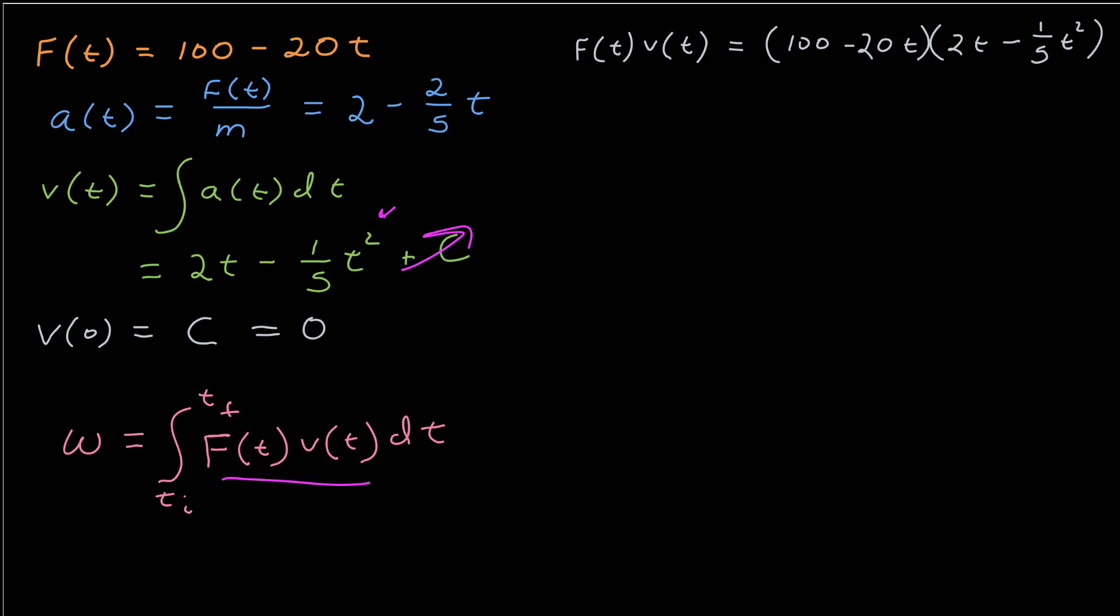Multiplying them out, I get four terms, those two. Then the inner terms, 40t squared. The outer terms, 100 times negative 1 fifth t squared gives me 20t squared. And then 4t cubed, the last terms from each. Consolidate those. The minus 40t squared minus 20t squared gives me negative 60t squared.